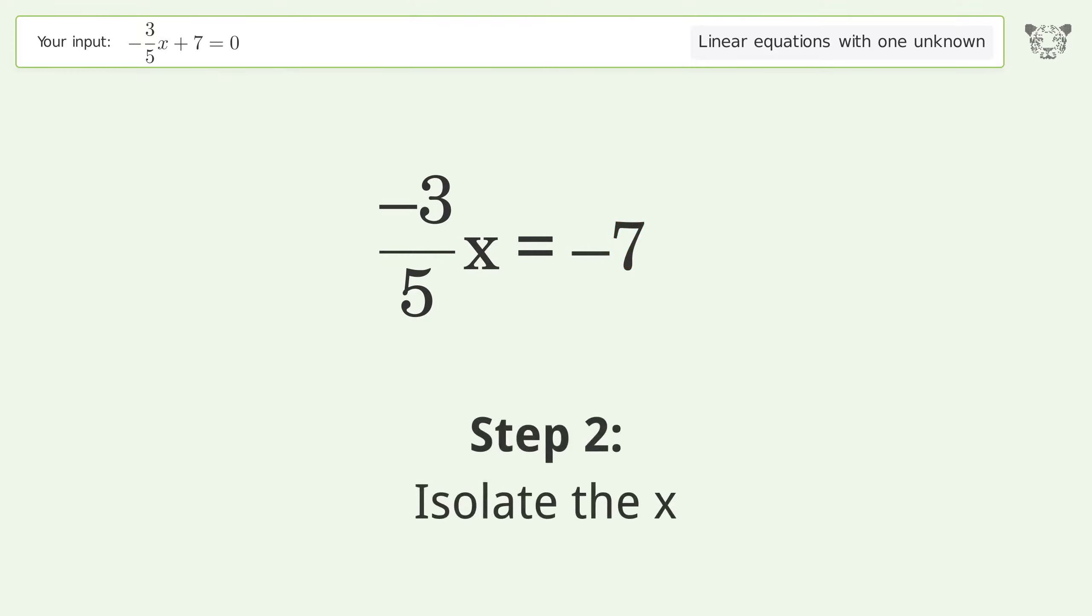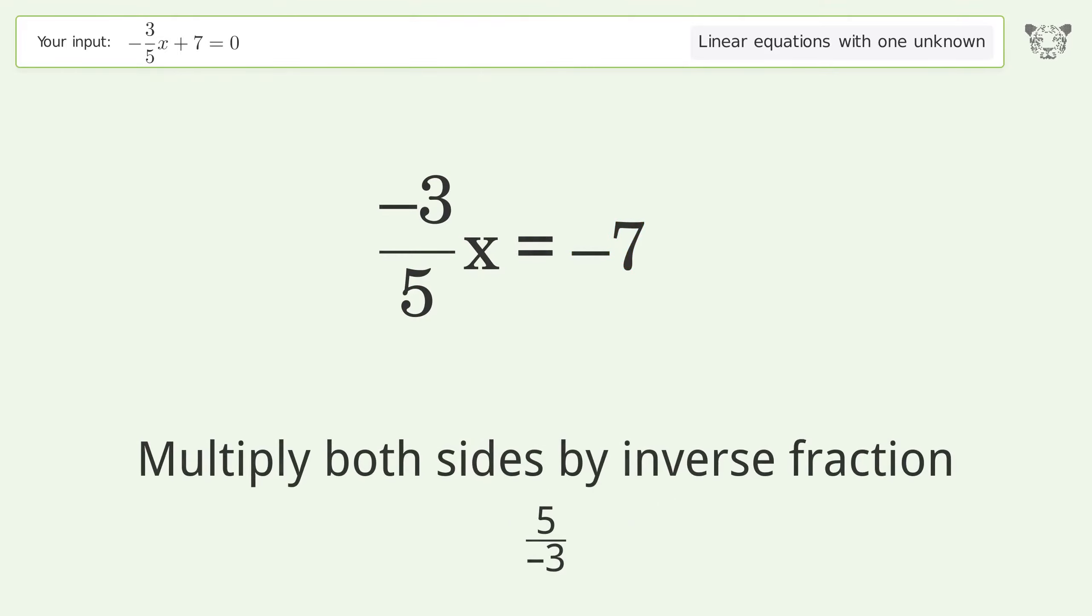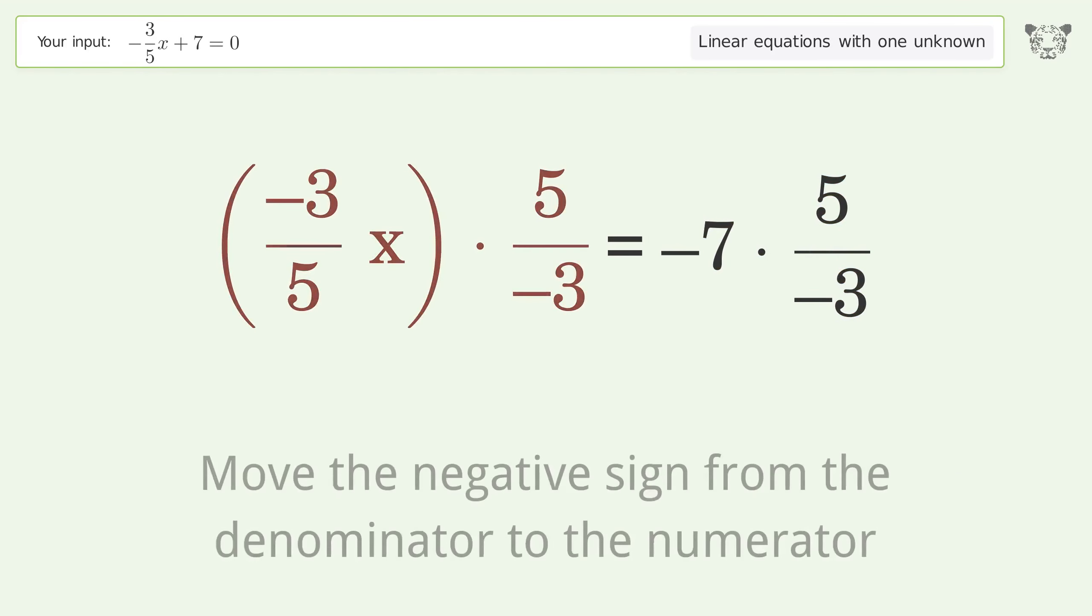Isolate the x. Multiply both sides by inverse fraction 5 over negative 3. Move the negative sign from the denominator to the numerator.